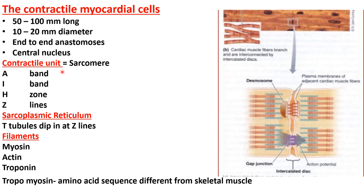The contractile unit is called the sarcomere. It has got an A-band, I-band, H-band, H-zone, and Z-lines. Apart from these contractile myofibrils making the sarcomere, the sarcoplasmic reticulum is very specially designed in the striated muscle fibers, with T-tubules entering the cell substance at Z-lines.